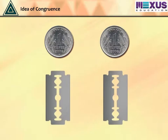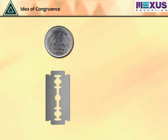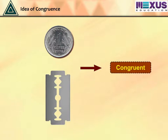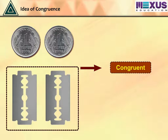Let us observe these objects. If you place the second object on top of the first, they would match perfectly. Such objects are said to be congruent. The two coins are said to be congruent as they have the same shape and same size. Also, the two blades have the same size and shape, hence they are called congruent.